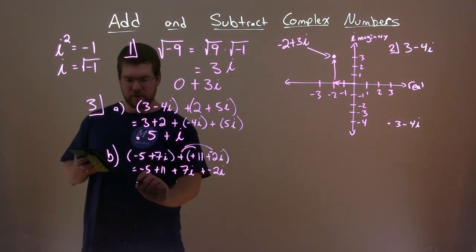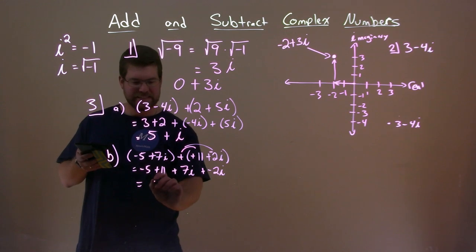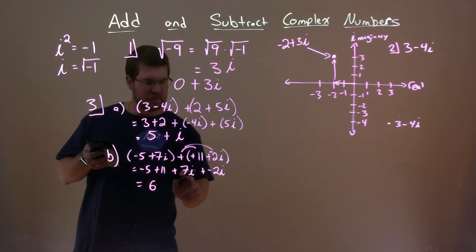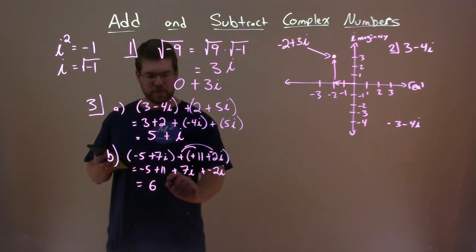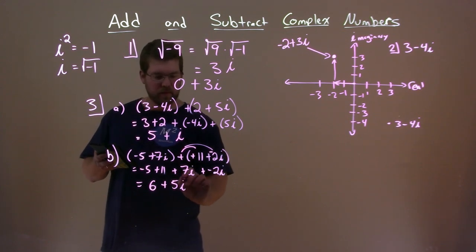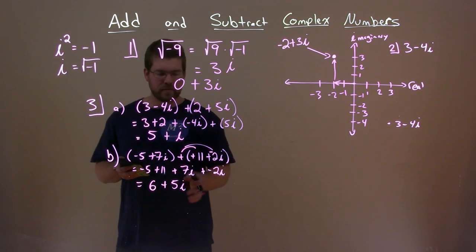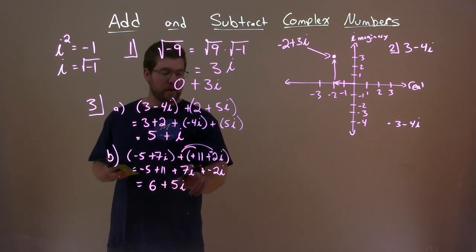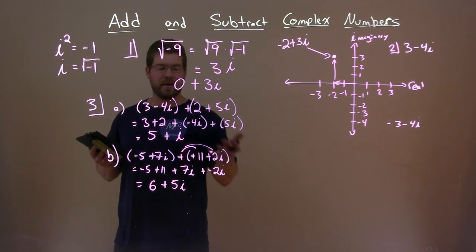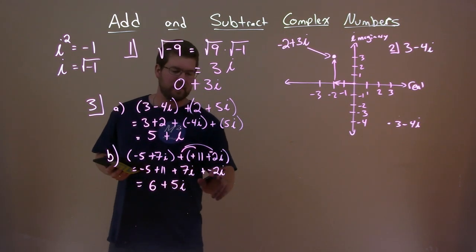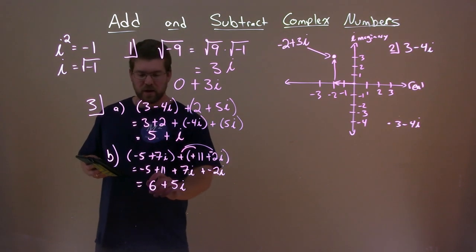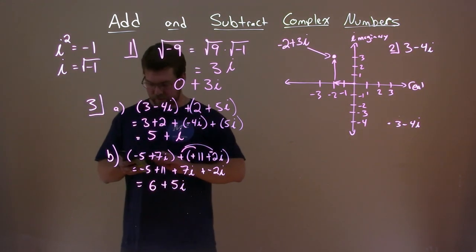So we have negative 5 plus 11, and that's going to come out to be a 6. And then we have 7i plus a negative 2i, which is a positive 5i. And I'm kind of combining the two steps. Some people say separate the 7 and the 2 first, do that, and then combine it with the i. I'm just doing it as such. So here our second answer is just 6 plus 5i.